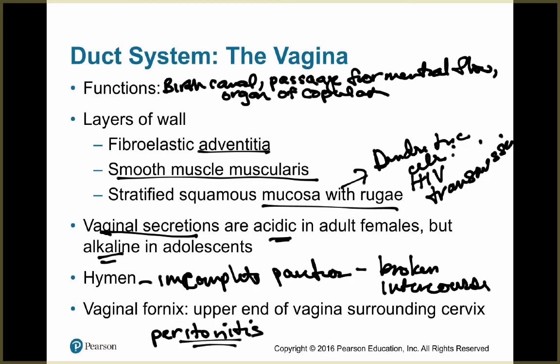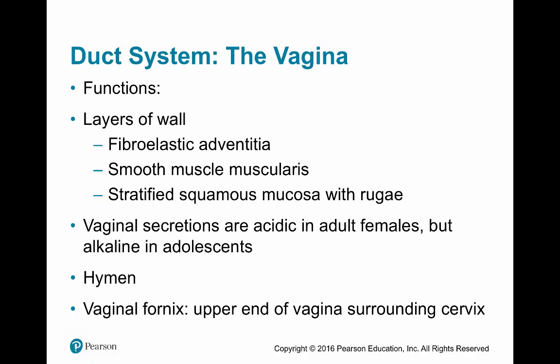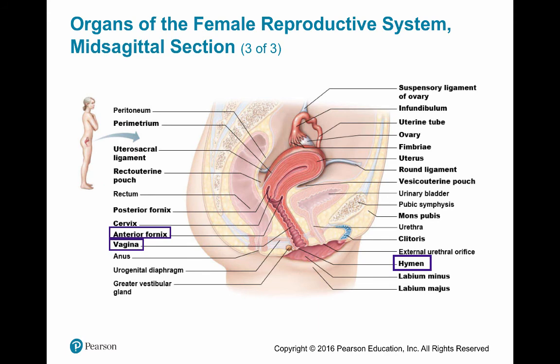The vaginal fornix is the upper end of the vagina surrounding the cervix. Looking at the diagram, the vagina is the major opening toward the top where the cervix is the fornix, and toward the bottom — protecting it — is the hymen.